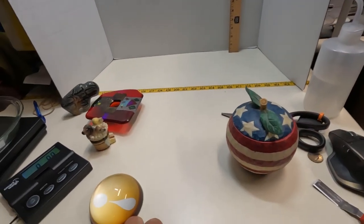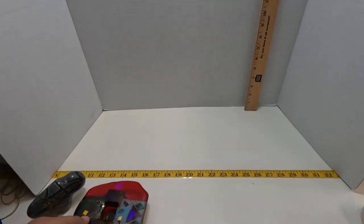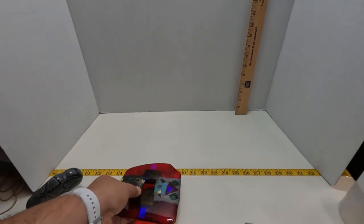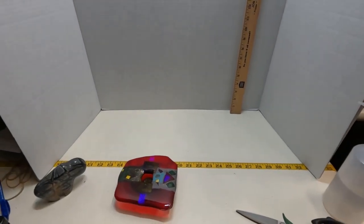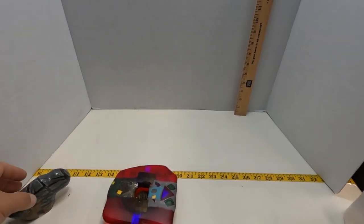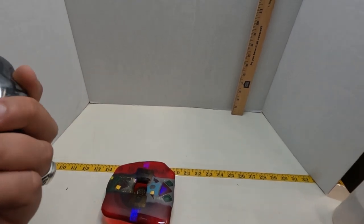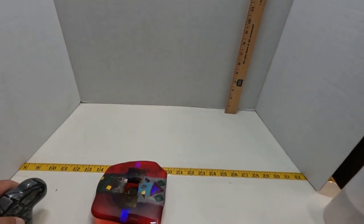For that barbell piece, I ended up listing it for seventy dollars and the reason is because the only other thing listed was a used one - actually two other listings. One was used complete and the other was just the barbell, and they're asking 50 bucks for each of those. Mine is unused, so that's what I'm going to go with right now.